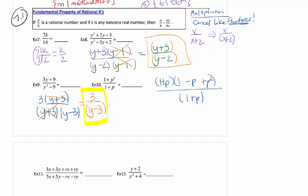You can rewrite the problem as (p³ + 1) over (p + 1) — it will still work. The (1 + p) factors cancel. You're left with only the trinomial in the numerator. Remember, we don't leave a 1 in the denominator, but if it ends up there you must put a 1 as a placeholder in the numerator. The answer is 1 − p + p².